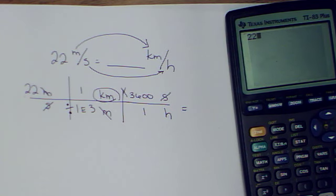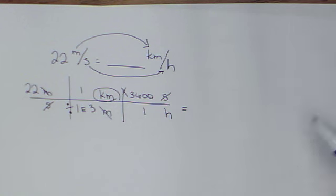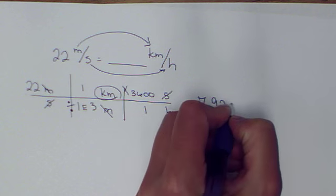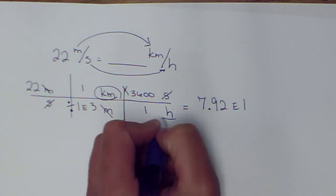So entering that into my calculator, 22 divided by 1 second E3, do not use times 10 carat top, because it will mess the whole thing up. Use the E button. Times 3,600 gives me 7.92 times 10 to the first, would be my answer.